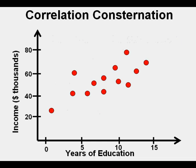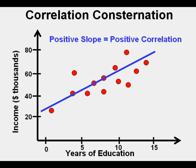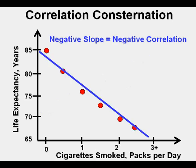Now, if we change this relationship to years of education and income, should there be something different? Yes. We can make out a trend, shown here by a blue line. Whether a correlation is positive or negative is related to whether the trend line has a positive or negative slope. This positively sloped trend line indicates a positive correlation, whereas this scatter plot of life expectancy compared to the amount of cigarettes smoked is best fitted by a line with a negative slope, demonstrating negative correlation.